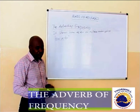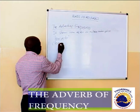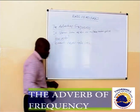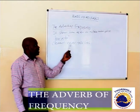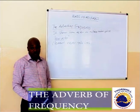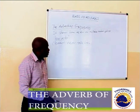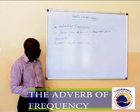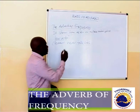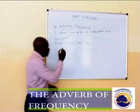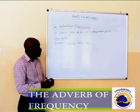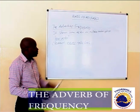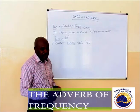Let's look at some examples. Clement never tells lies. Which word is the adverb of frequency? It's the word 'never.' The word 'never' is telling us how often Clement refuses to tell lies. So 'never' there is an adverb of frequency.